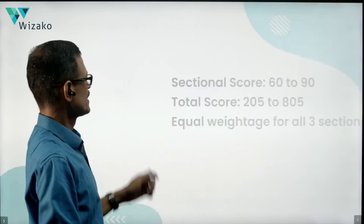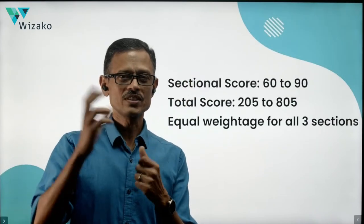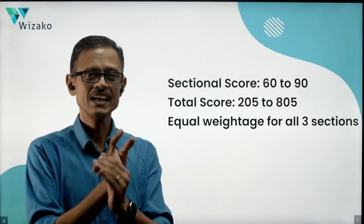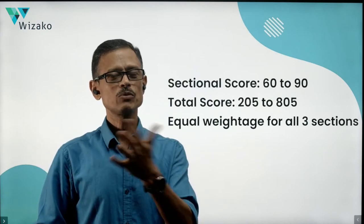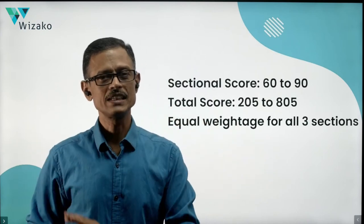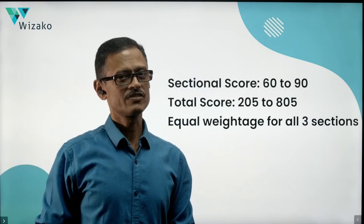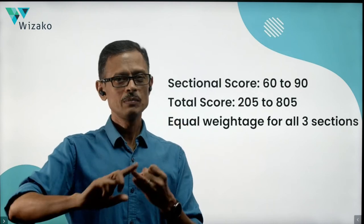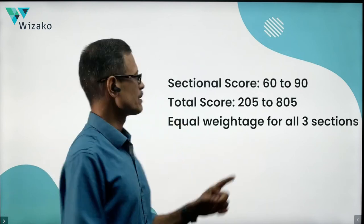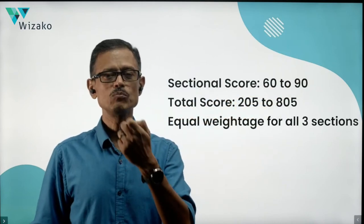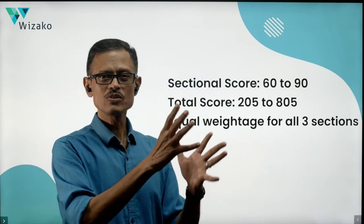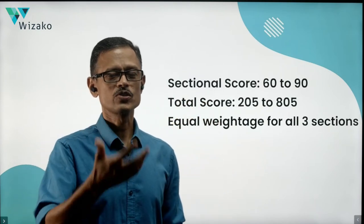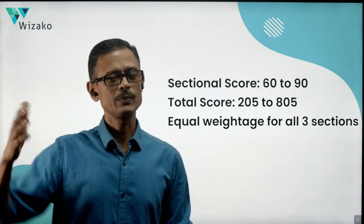Let's look at a few more things. The sectional score used to be 0 to 60, with actual scores between 6 to 51 for quant and verbal, IR was 1 to 8, and AWA was 0 to 6. In the new GMAT Focus Edition, quant, verbal, and data insights will all be scored on a scale of 60 to 90, moving in one-point increments. The overall score in the existing version is 200 to 800, going in increments of 10.